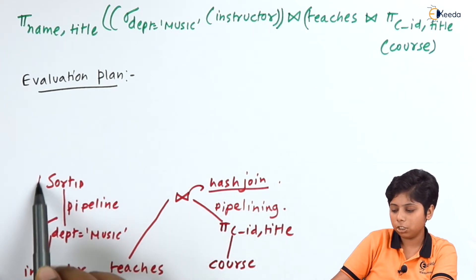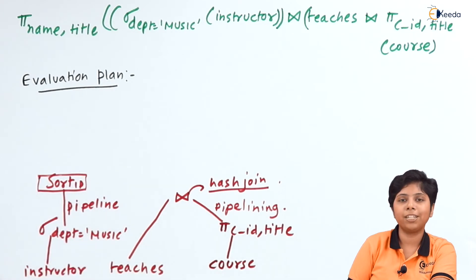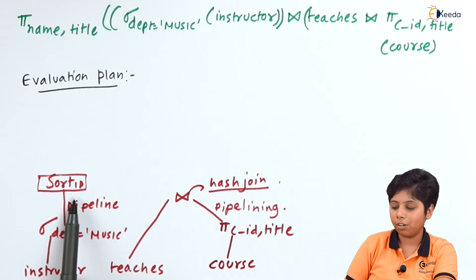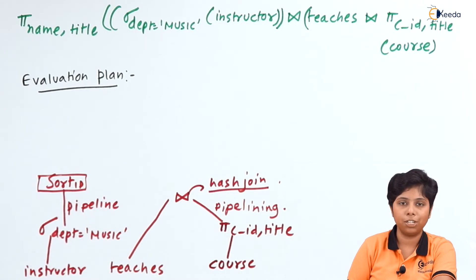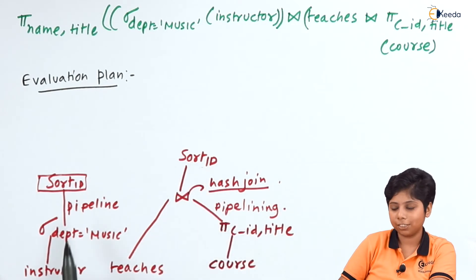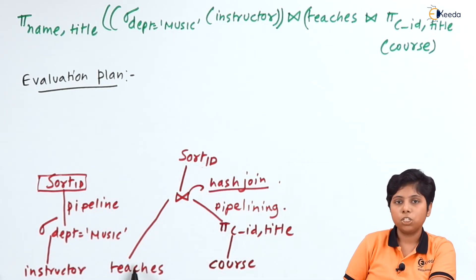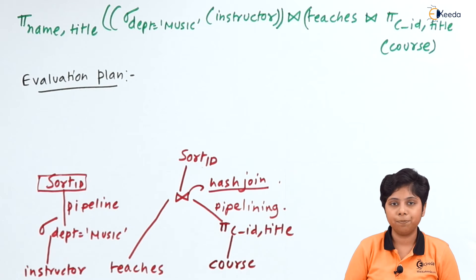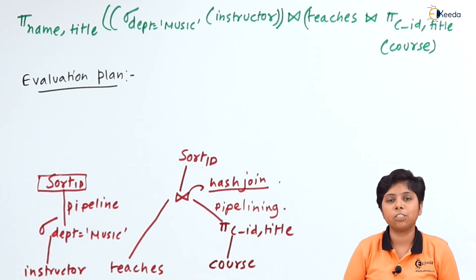We use the selection on department equals music with pipelining to a function sort by ID, since we are sorting with ID as a primary key. This gives all instructor relations matching the department equals music predicate, sorted by ID. The third evaluation step sorts the instructor relation. From teaches and course we also sort by ID so all instructor IDs match with teacher IDs.